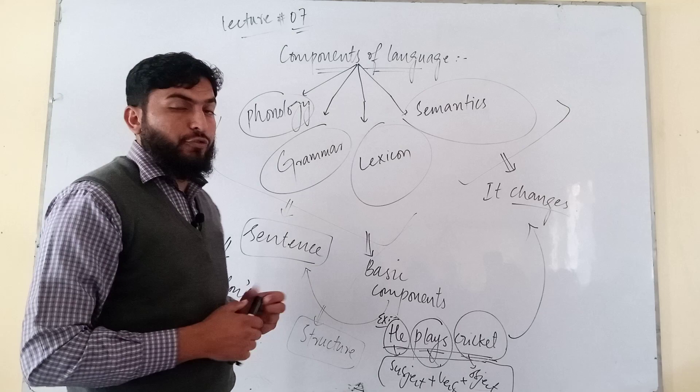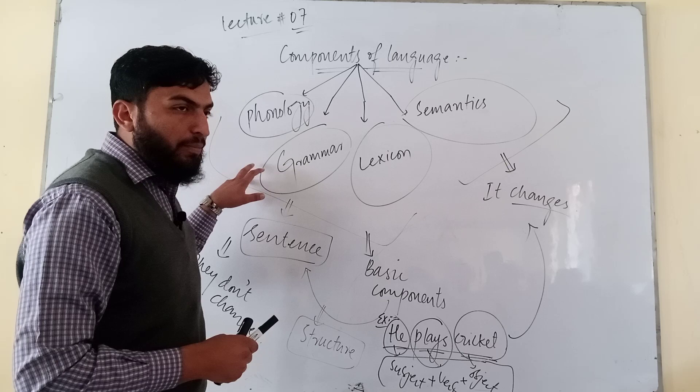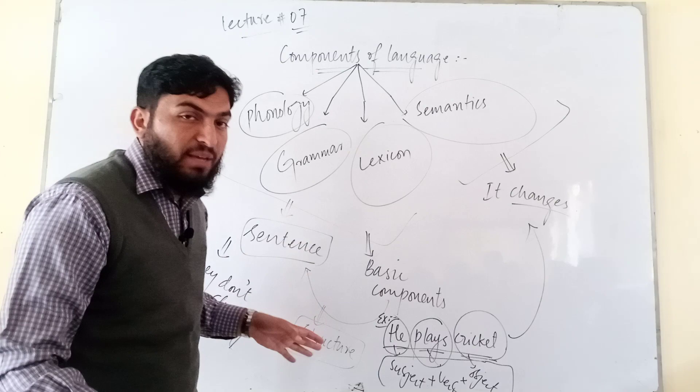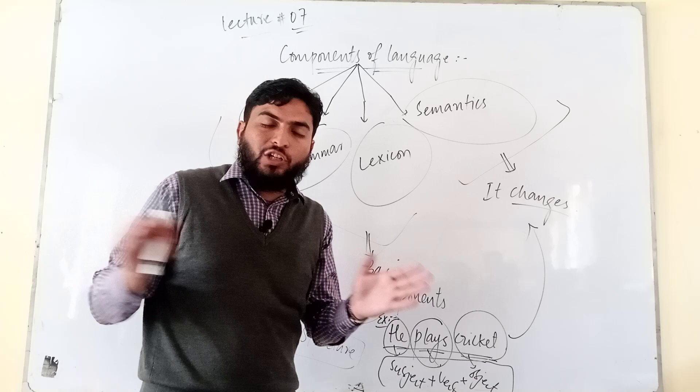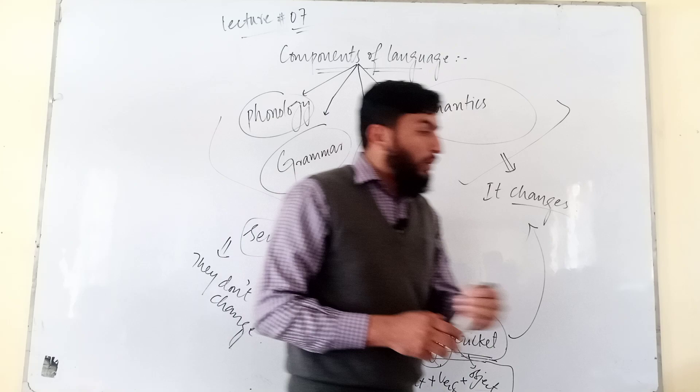These are the components of language. There are three basic components, but actually four components in total. Three are basic because they remain the same — they do not change. And semantics is the last component of language, which changes from person to person, from area to area, from place to place, from class to class. In the next video, I will discuss each one through logical ways. Thank you.